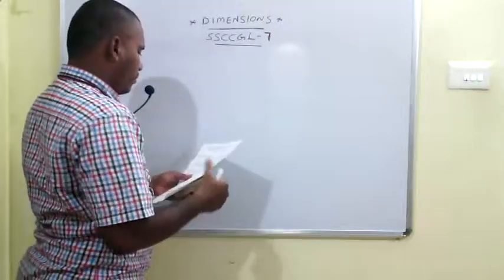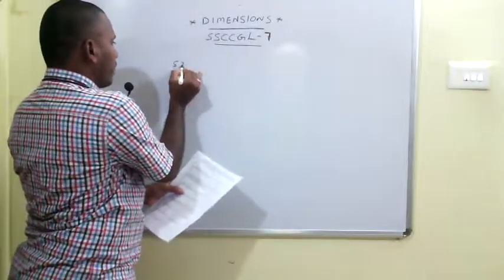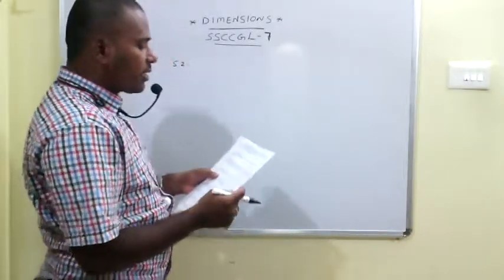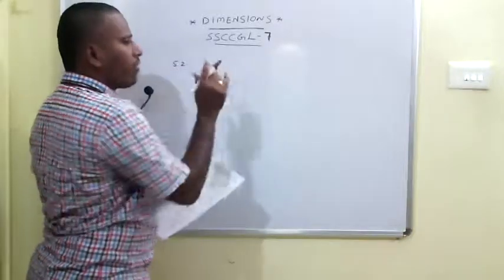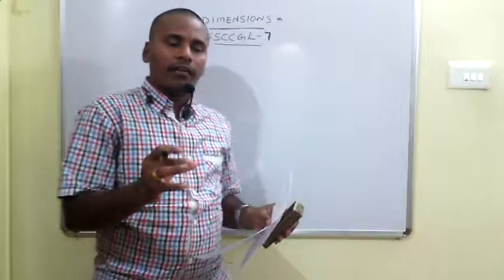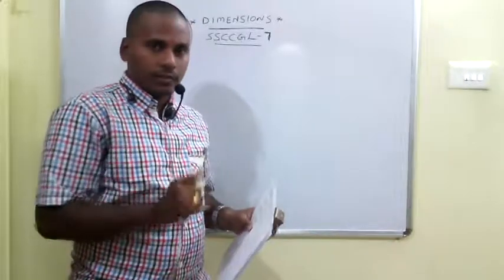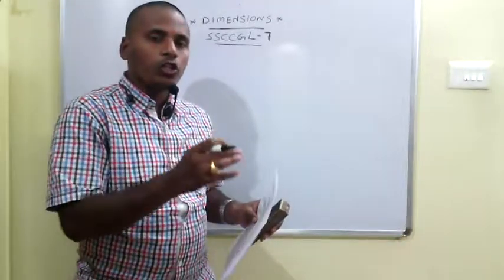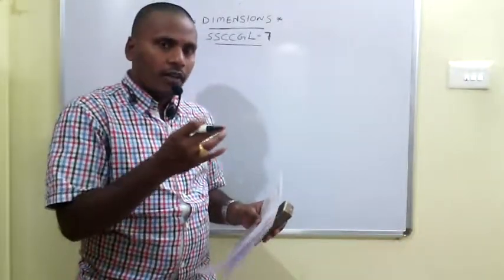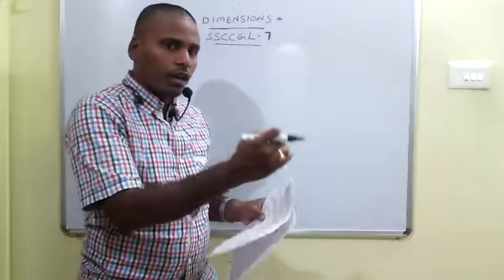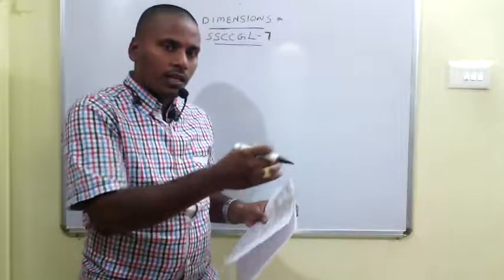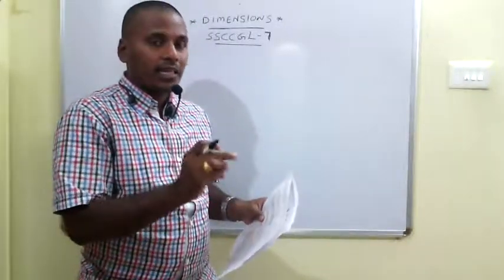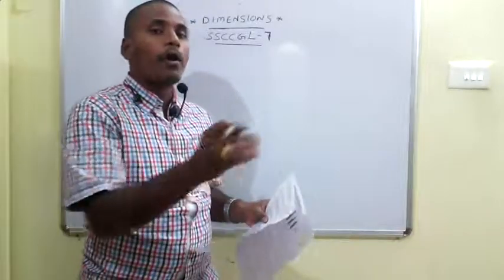The next one is the 52nd question. In a maternity center, 5% of all childbirth cases result in twins. So out of 100 cases, 5 are twins and 95 are normal deliveries. Out of 100 newly born cases, 95 are normal children and 5 twin cases produce 10 children who are twins, giving 105 total children.